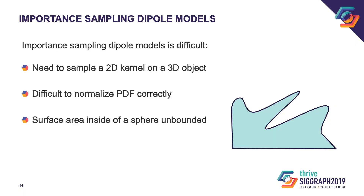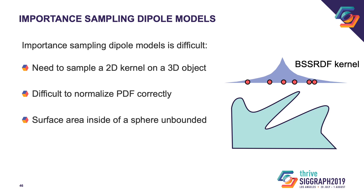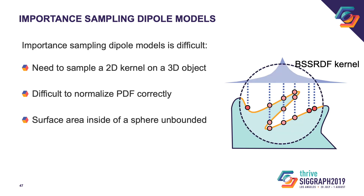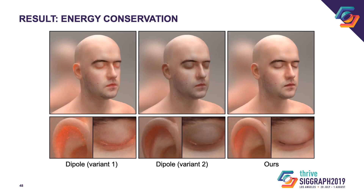This also highlights one of the main problems with dipole models: it is very difficult to correctly importance sample the derived BSSRDF on arbitrary 3D geometry. Dipole-based methods result in a two-dimensional BSSRDF kernel, and when importance sampling this kernel, we have to map samples generated according to this 2D kernel to the 3D geometry. To correctly normalize the sampling procedure, one would have to compute the total surface area inside of a small sphere — this area is unbounded, so correct normalization is very difficult. Depending on how we normalize the dipole model, we either end up with excessive energy gains or losses, particularly visible in regions with complex geometry such as eyelids or ears. Our method does not have any of these issues, as it does not require manual normalization.